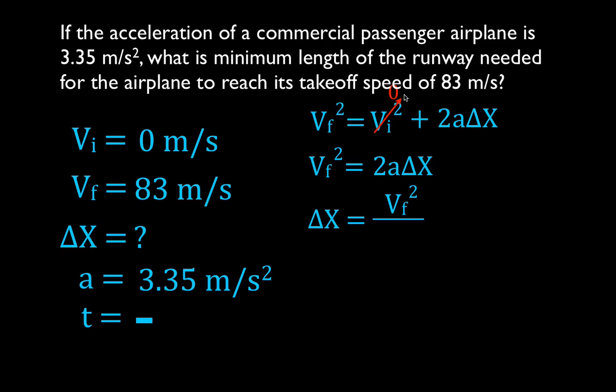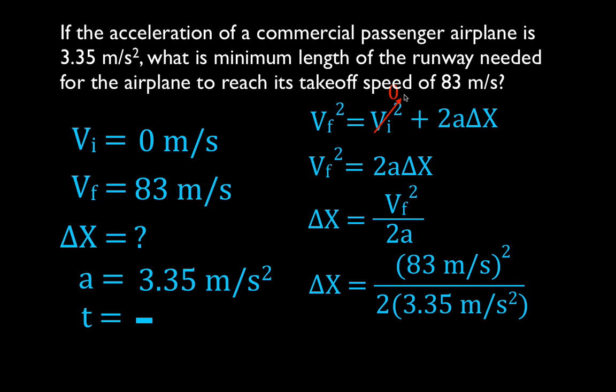We're just going to divide both sides by 2a. We get that delta x is equal to the final velocity squared divided by 2a. Now we plug the values in.